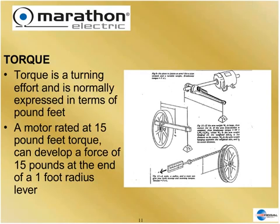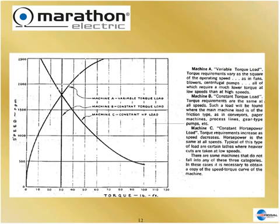Slip creates torque, and it requires torque. Before we talk about motor torque, there are basically three kinds of classic machines. Machine C is not as common, so we'll concentrate on the first two. Machine A is a variable torque load — as you can see by the chart, torque increases exponentially as speed increases. That's why it's called a variable torque load.